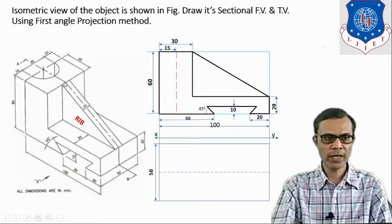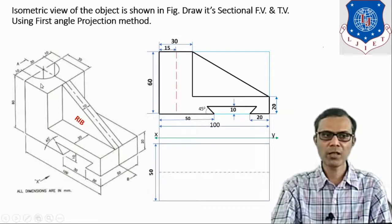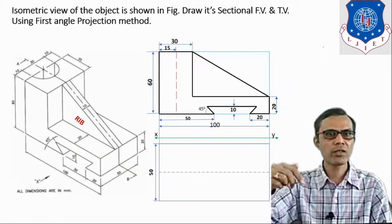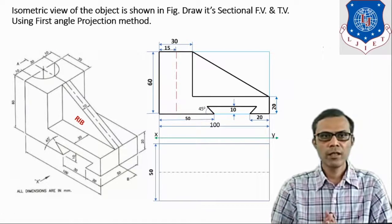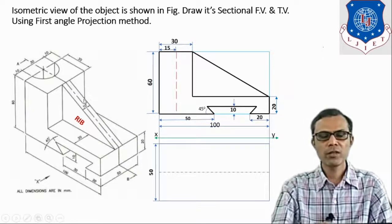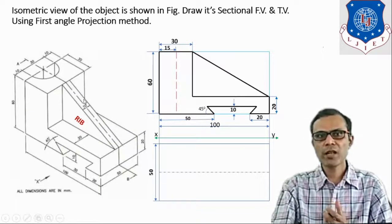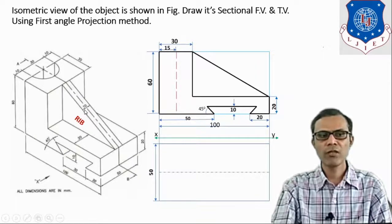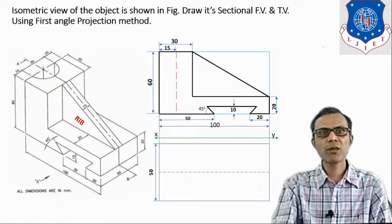From the top view direction we can see the surfaces. The base plate is clearly visible and will look like a rectangle with the semicircular cut part. This rib has a triangular true shape, but when we look at this rib from the top view direction, it will look like a rectangular strip with a width of 10 mm. So these are the visible details.